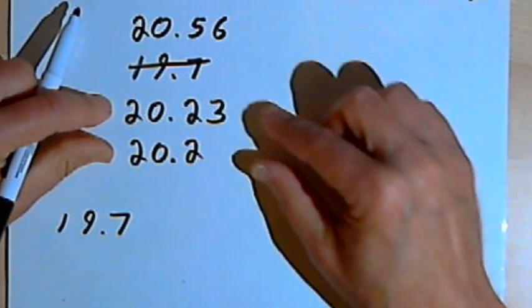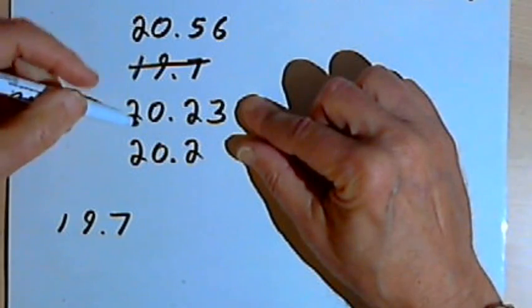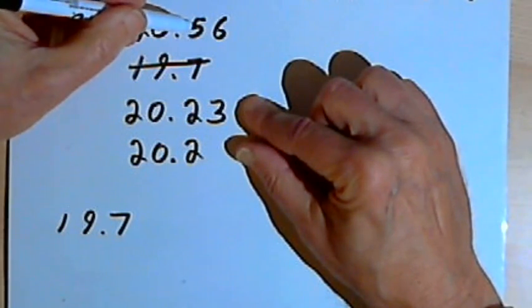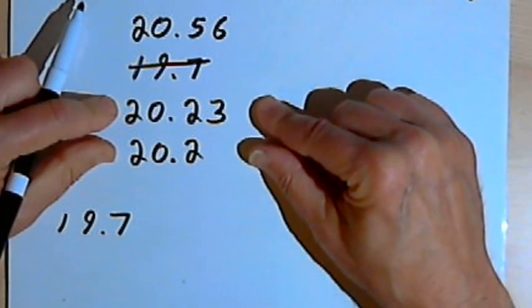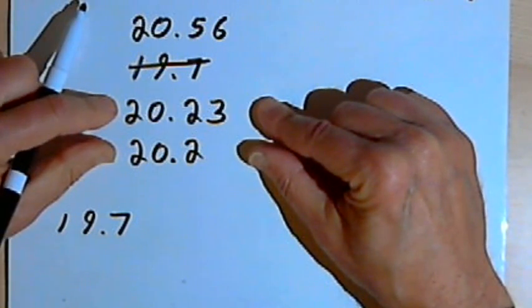So those last two numbers are going to be smaller than the one with the 5 in them, the 20.56. I want to compare those last two numbers, 20.23 and 20.2.